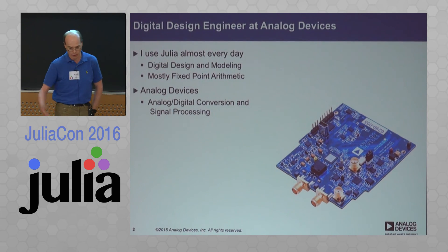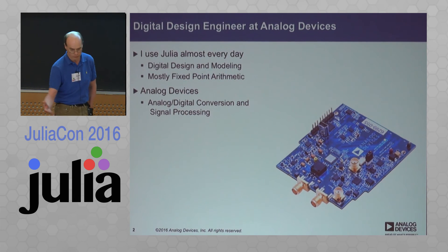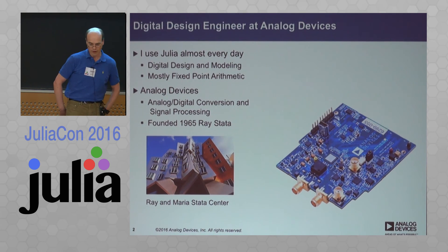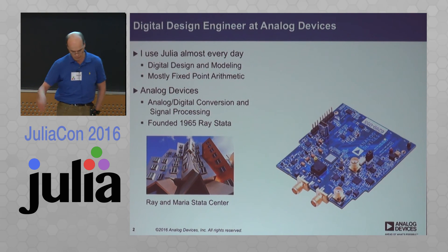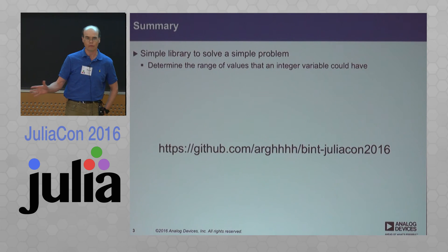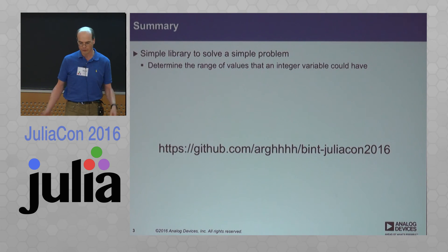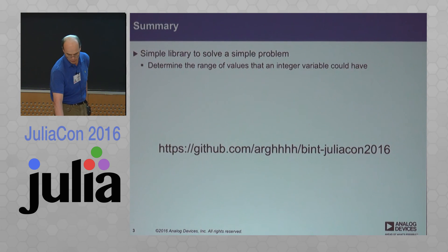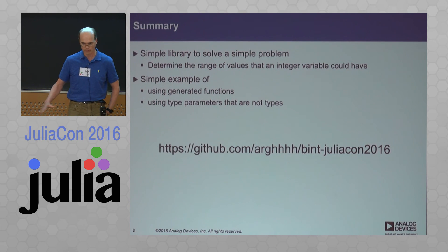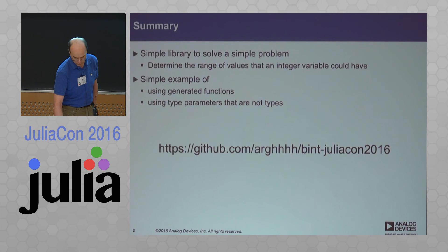Analog Devices is a hardware chip company for the most part. We're doing analog-digital conversion, signal processing, and just coincidentally it was founded in 1965 by Ray Stata — the same Ray Stata as the name of this building. In summary, what I'm going to talk about is a very simple library to solve a very simple problem: determining the range of values that an integer variable can have. It's a simple example of using generated functions and type parameters which are not types, they're just numbers, and the code is up there on GitHub.